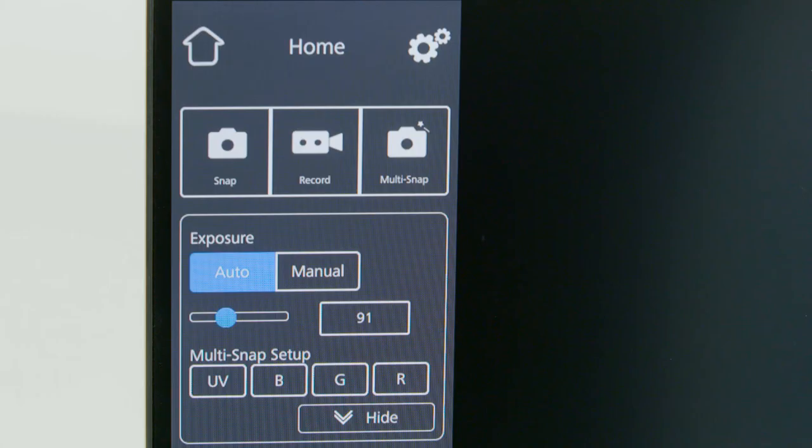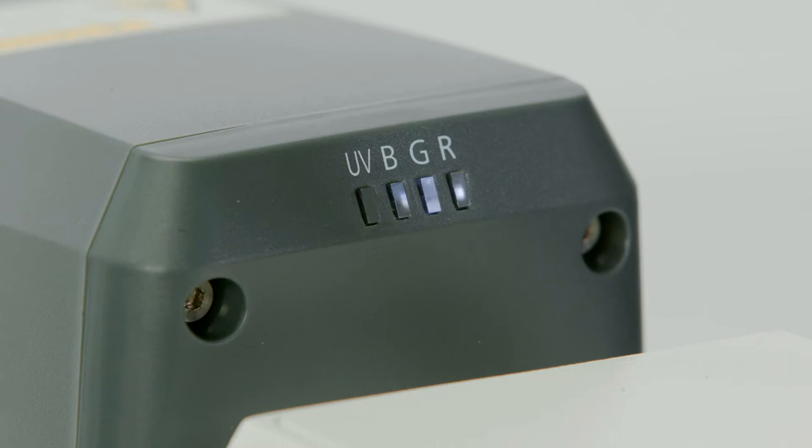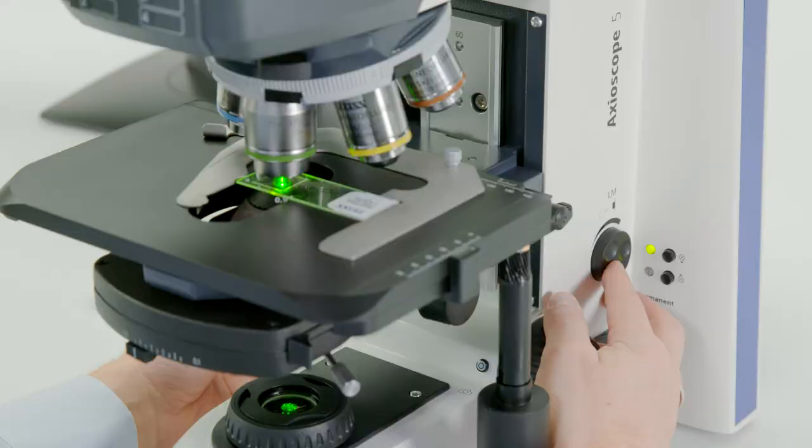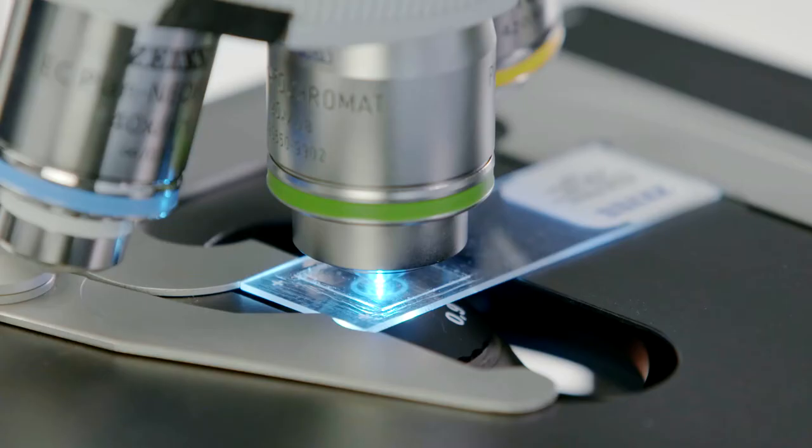Now you're ready to switch to the fluorescence mode on your Axioscope 5 microscope. Toggle to the UV LED. Since DAPI provides a strong fluorescent signal, use a low magnification objective to locate and focus your sample, then switch to the magnification you need.